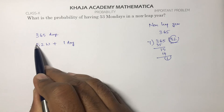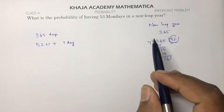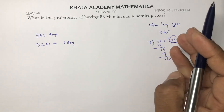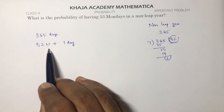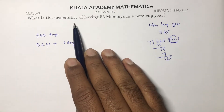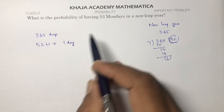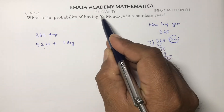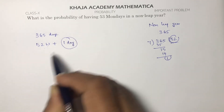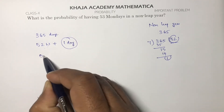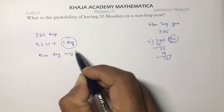With 52 complete weeks, every day of the week appears exactly 52 times. The question is what is the probability of having 53 Mondays? That is decided by this one extra day.